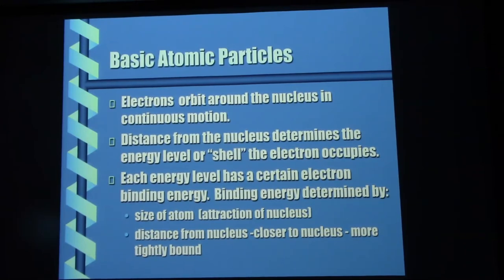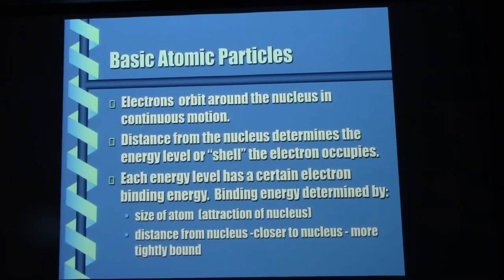Each shell — K, L, M, N, O, P — has a binding energy associated with it. The binding energy has several factors that affect its strength. It's determined by, number one, the size of the atom. Larger atoms with a larger nucleus exert more gravity on their electrons, so the binding force is higher. And the other factor is distance from the nucleus — the closer an electron is to the nucleus, the stronger the binding force. As we get out further in these shells, the binding force is much reduced.